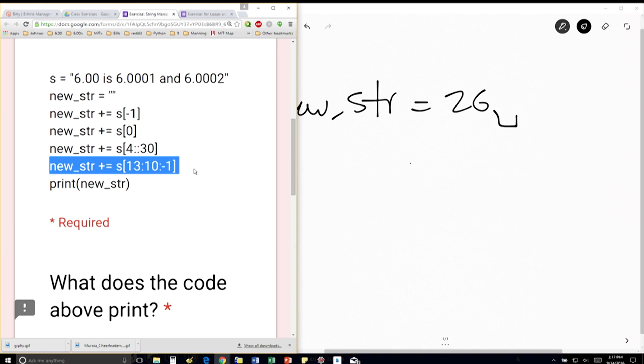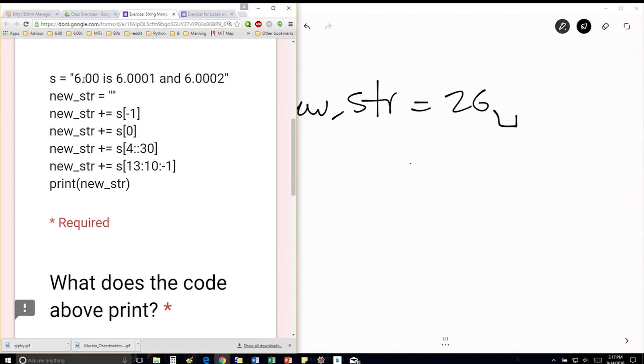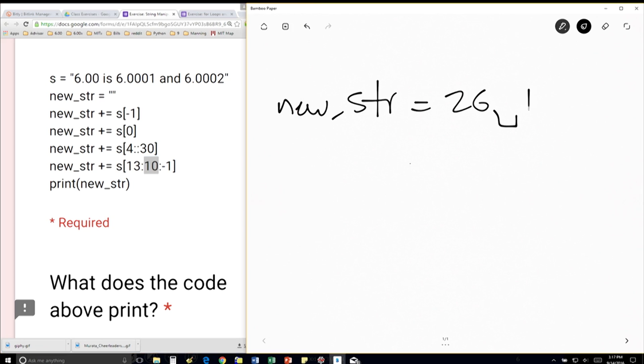And then the last thing we're doing here is we're starting at 13. So now I'm going to have to count 13. 0, 1, 2, 3, 4, 5, 6, 8, 9, 10, 11, 12, 13. That's the 1. I'm going to go backward because of this minus 1. And I'm going to go backward until 10, but right before 10. So 1 less than 10. So I'm going to do 100. So this 1, this 0, and then this 0. And then I'm going to print this new string.